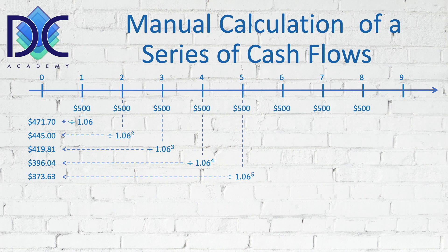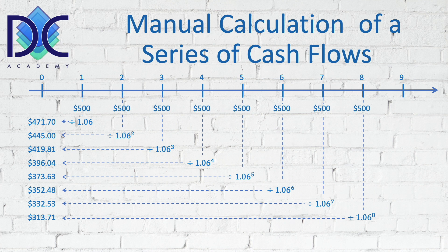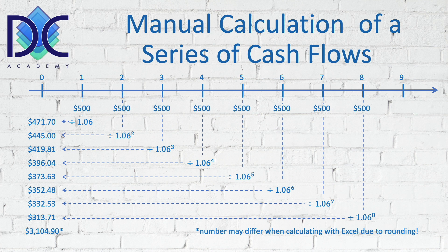You can make this very easily in an Excel spreadsheet by putting in the formulas. At the end of the eighth period, the $500 has to be divided by 1.06 to the eighth power, giving us $313.70. When we add all the present values together, the total present value of all those cash flows is $3,140.90.